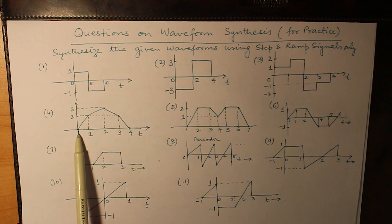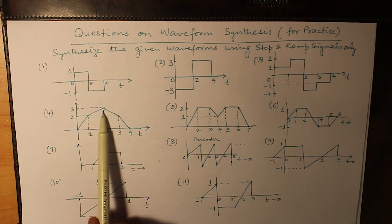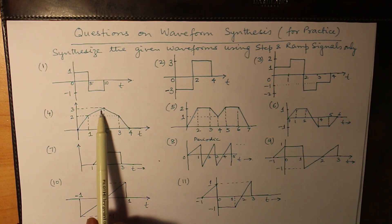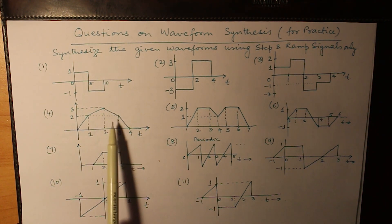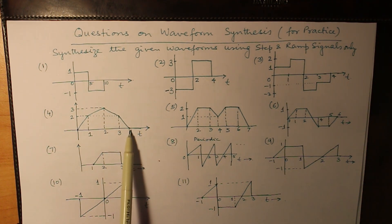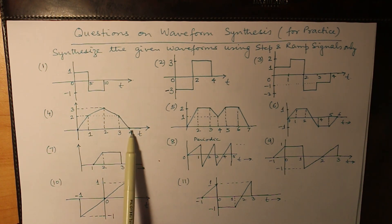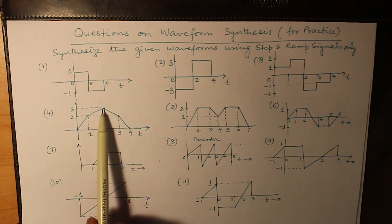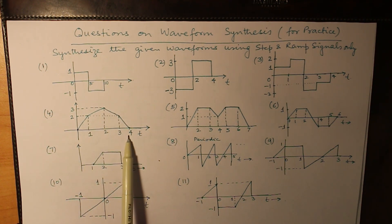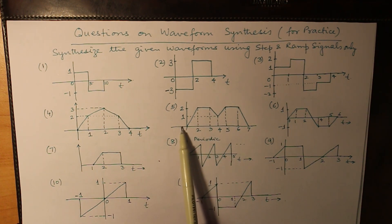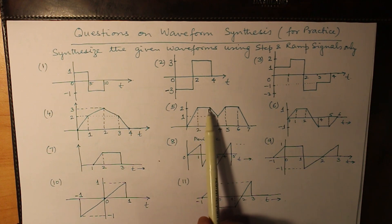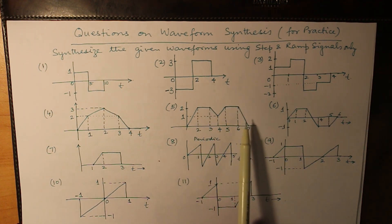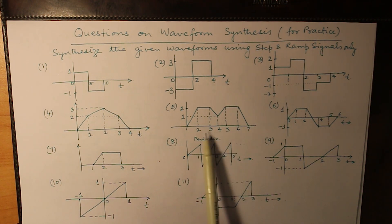For question 4, one ramp signal starts at t equals 0. At t equals 1, another ramp signal decreases the slope from 2 to 1. At t equals 2, the slope changes from 1 to minus 1. At t equals 3, there is another change of slope. At t equals 4, it becomes flat — a positive change of slope from minus 1 to 0. So there are 5 ramp signals in question 4. For question 5, counting the slope changes: 1, 2, 3, 4, 5, 6, and 7 — so there are 7 ramp signals.